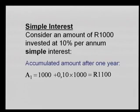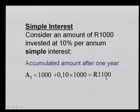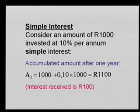So 0.10 — that is the 10%, because 10% is 10 over 100. In decimal form, 0.10 times a thousand gives us the accumulated amount of 1,100, because we're adding that simple interest. The interest received is 100 Rand.